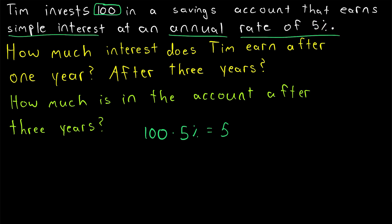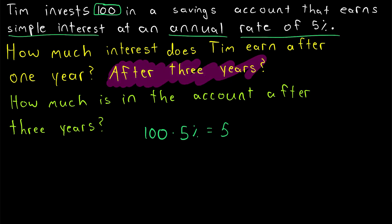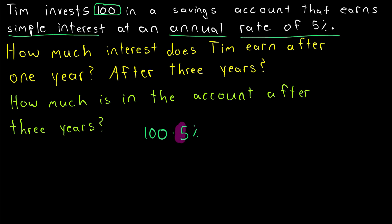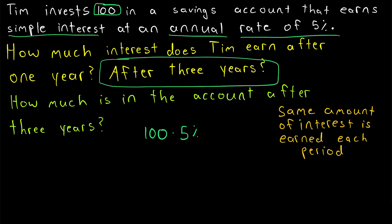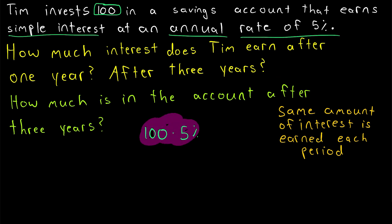Now we can move on to the second question. How much interest does Tim earn after three years? We are earning that 5% simple interest three times, because three years have passed. The key part of simple interest is that the same amount of interest is earned each period. To calculate the total interest earned after three years, we multiply the interest earned after one year — which is 5% of 100 — by three. This equals 5 times 3, which is 15. So Tim has earned 15 in interest after three years.